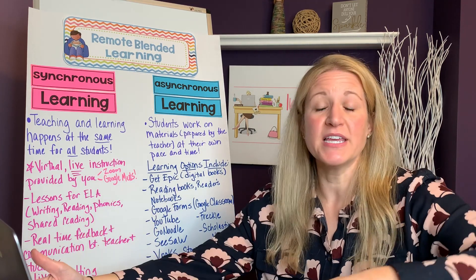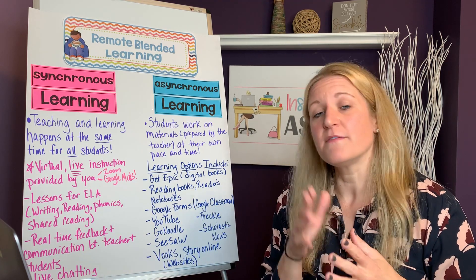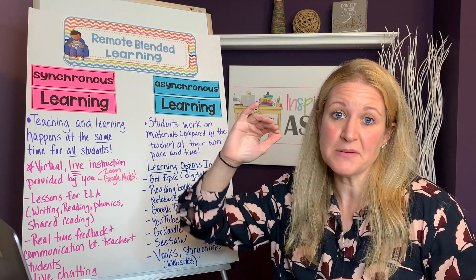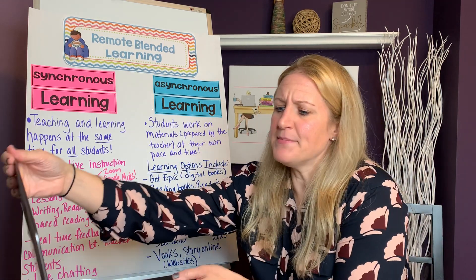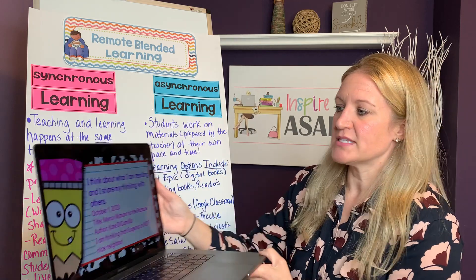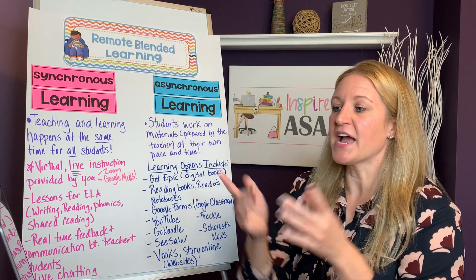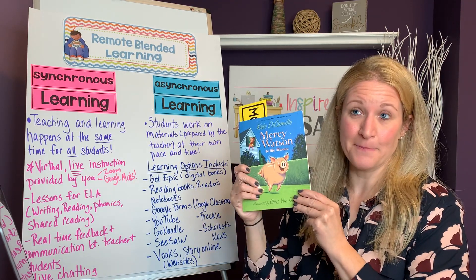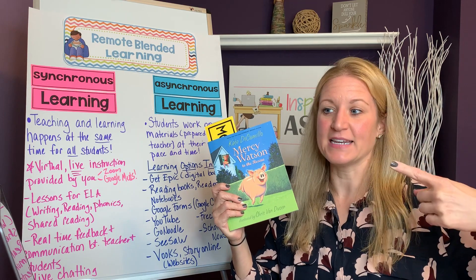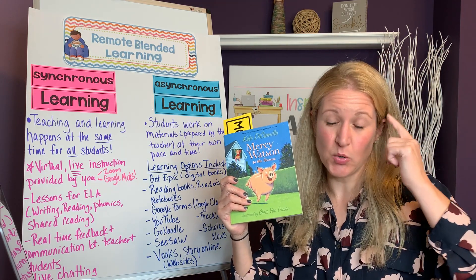The first thing that I would do is introduce the learning target to my students, and I would do that on Zoom via a screen share. I would share my screen with my students and begin by stating the learning target. What I would display to my students is the learning target and have them repeat it with me — and it's okay if they're on mute. 'I think about what I am reading and I share what I am thinking with others.' We repeat that again: 'I think about what I am reading and I share my thinking with others.'